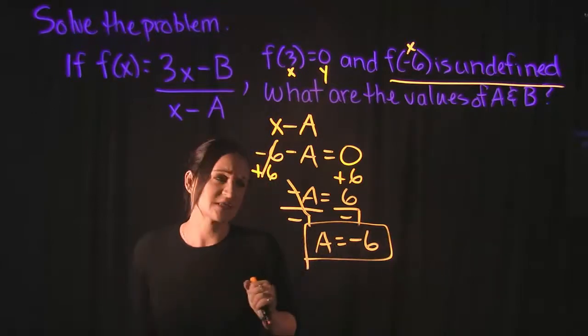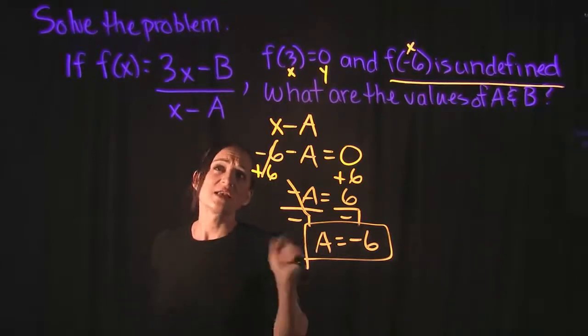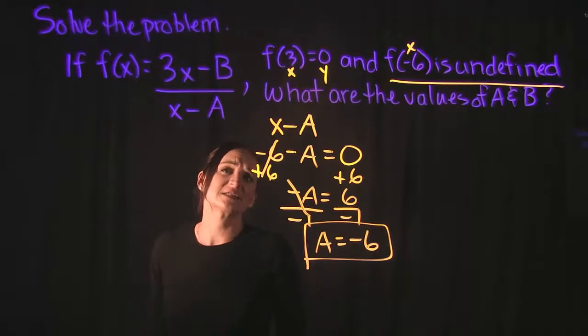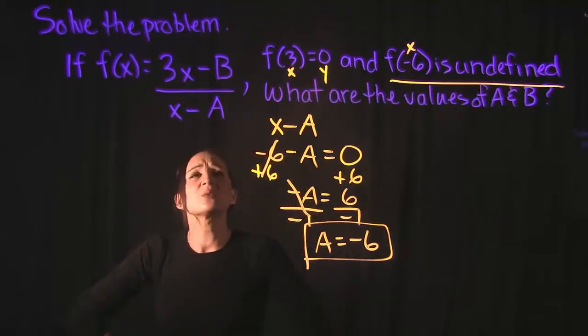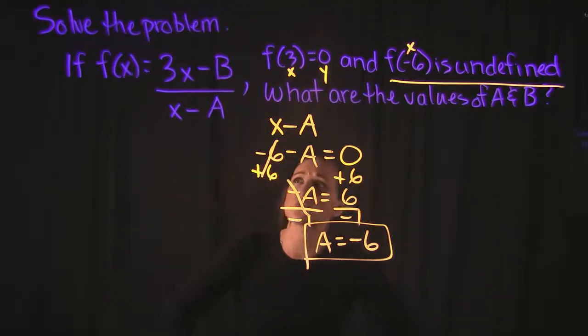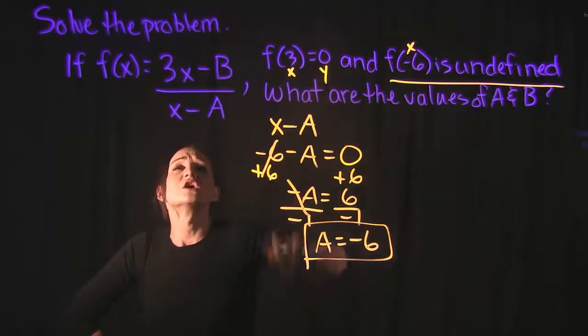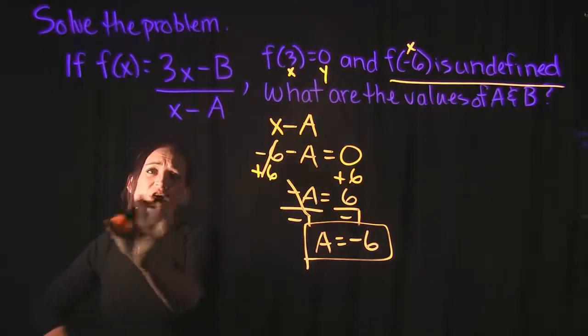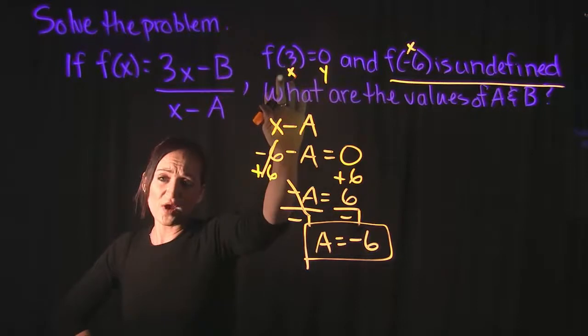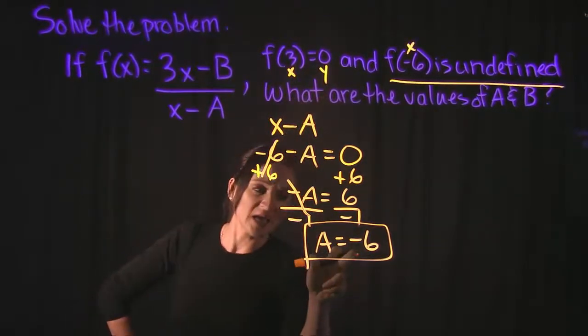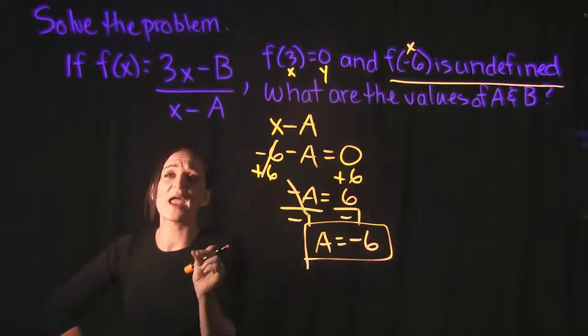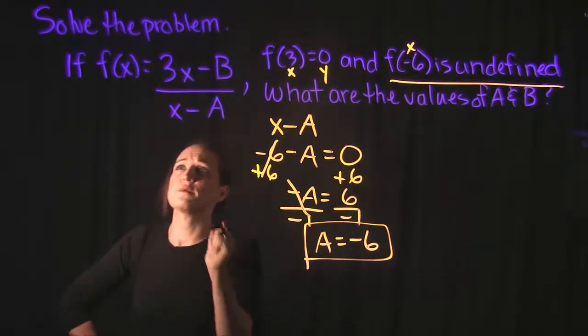So there's one of our pieces of missing information. Now we need to figure out what b is. So the other piece of information they told us is that f of 3 is equal to 0. So that means when we plug in 3 in for x, we get 0 for y. So what I'm going to do is I'm going to take our function. I'm going to plug in 3 for x. I'm going to plug in 0 for y. And I'm now going to plug in negative 6 in for a and see if we can find b here.